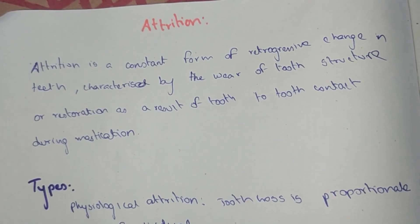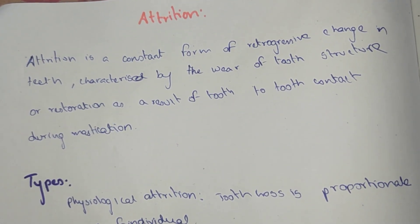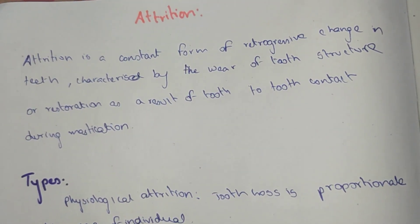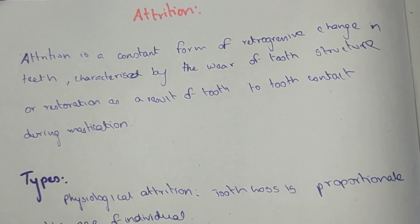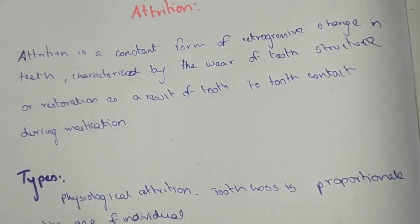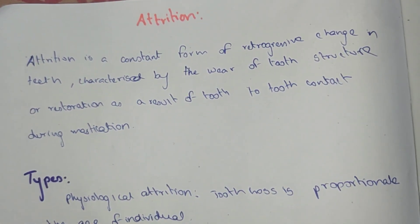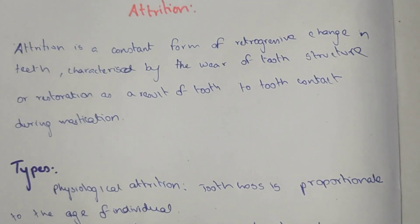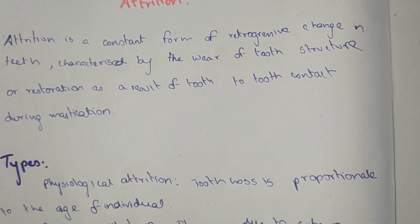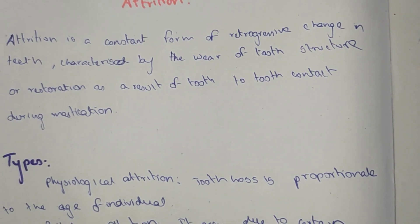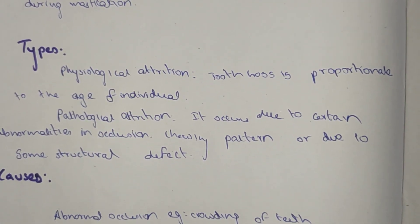Welcome to this video about attrition. Attrition is a constant form of retrogressive change in teeth, characterized by the wear of tooth structure and restoration as a result of tooth-to-tooth contact during mastication. When there is tooth-to-tooth contact, there will be wear of the tooth surface — this is known as attrition.